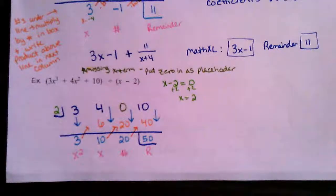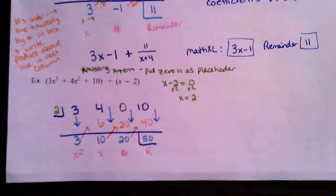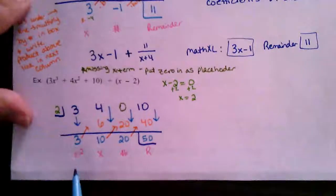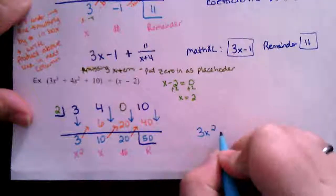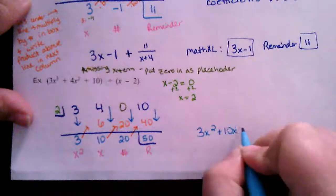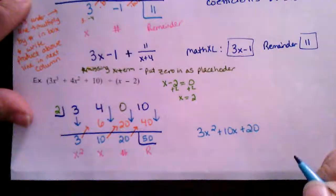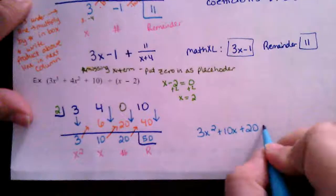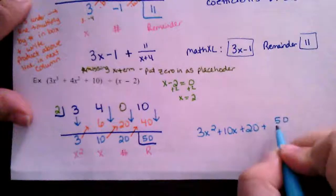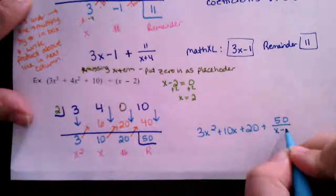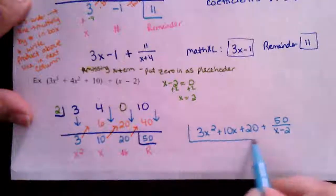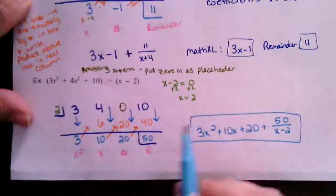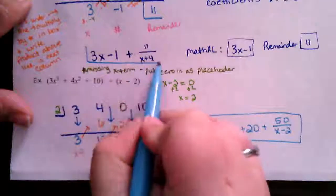Reading the answer: the remainder is 50, the next is a number, then x, then x squared. So the answer is 3x squared plus 10x plus 20, with a remainder of 50, written as plus 50 over (x minus 2).